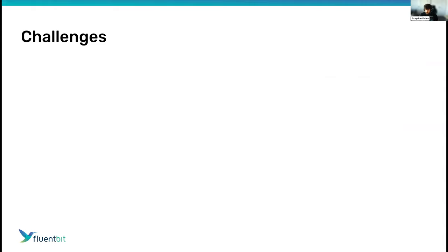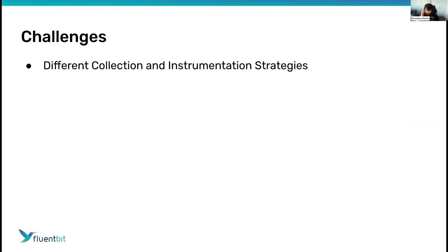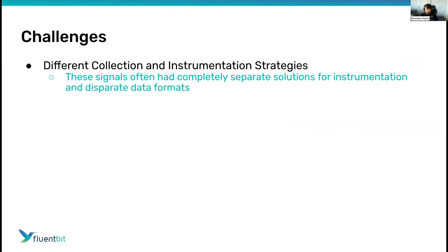But there are a lot of challenges with setting this up — it's some people's full-time job. The biggest challenge is that over time, the three different signals have had lots of different collection and instrumentation strategies with completely separate solutions. Even at Google Cloud, my team maintains two legacy agents — a legacy logging agent and a legacy monitoring agent — which do completely different things. We now have the Ops Agent, which does both at once, but even still under the hood we're using two agents: FluentBit for log collection and OpenTelemetry for metric collection.